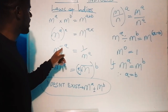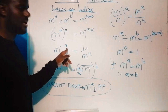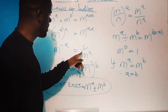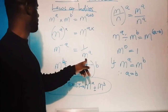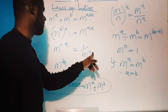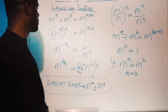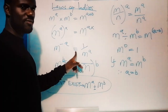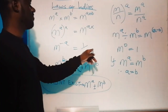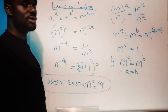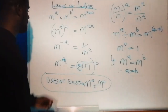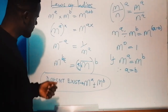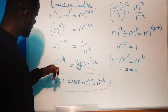The third law: any number raised to a negative power is the same as one over the number raised to the positive power. So m raised to negative a is equivalent to one over m raised to a.